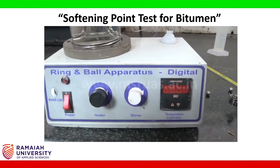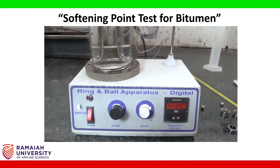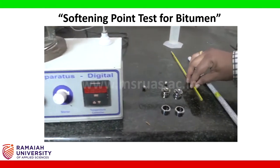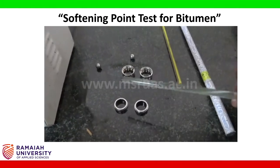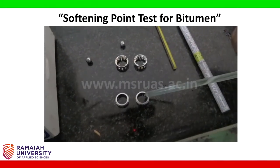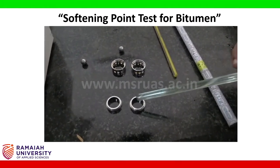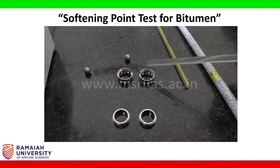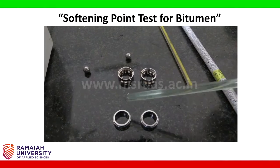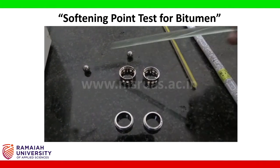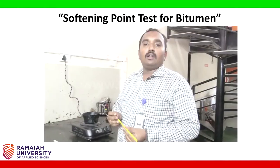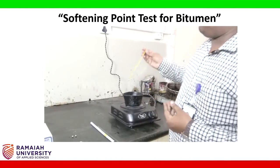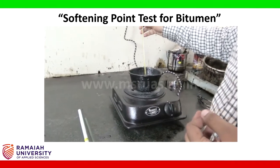There is also a provision for a digital thermometer sensor. When inserted, it gives a temperature reading directly on the display scale. The ring and ball apparatus has two rings where we fill the bitumen, outer coverings for the rings, and steel balls to be placed on the cooled bitumen. We begin the experiment by heating the bitumen to the pouring temperature of 125 degrees Celsius.